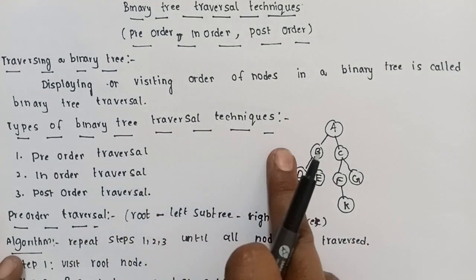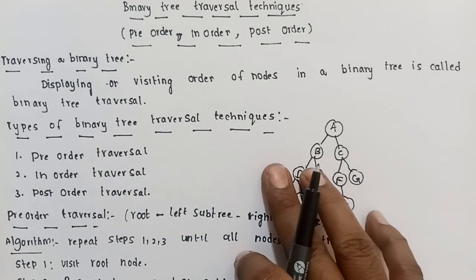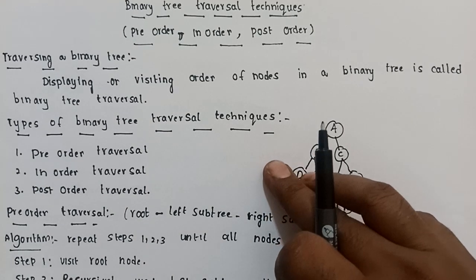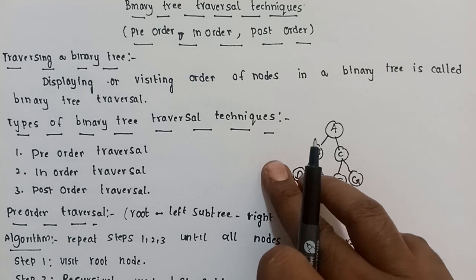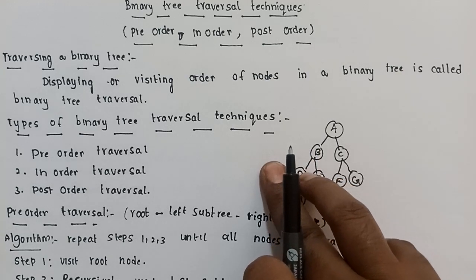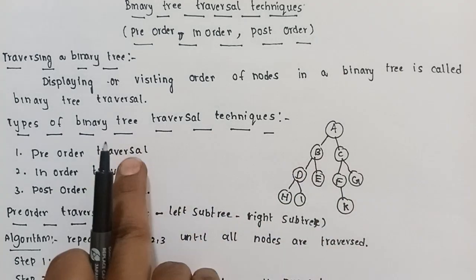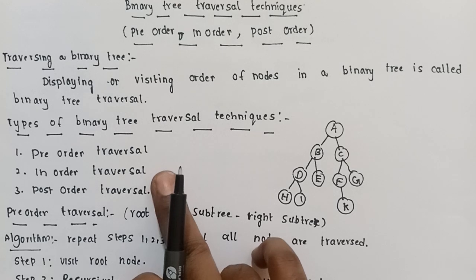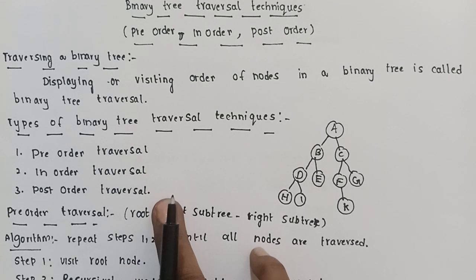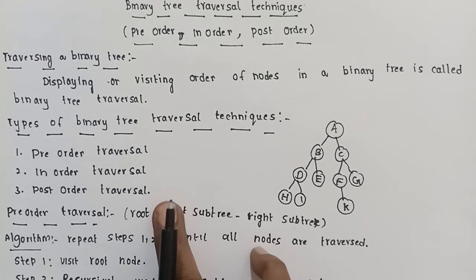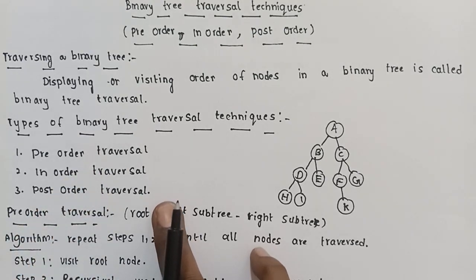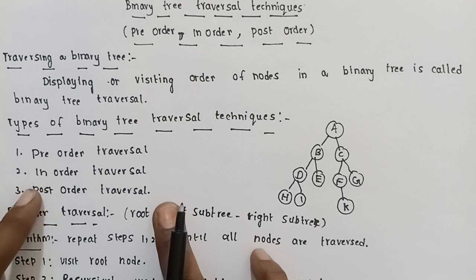There are three types of binary tree traversing techniques, based on when the root node is visited. If the root node is visited first, it is pre-order traversal. If the root node is visited in the middle, it is in-order traversal. If the root node is visited last, it is post-order traversal. So the three types are: pre-order, in-order, and post-order.